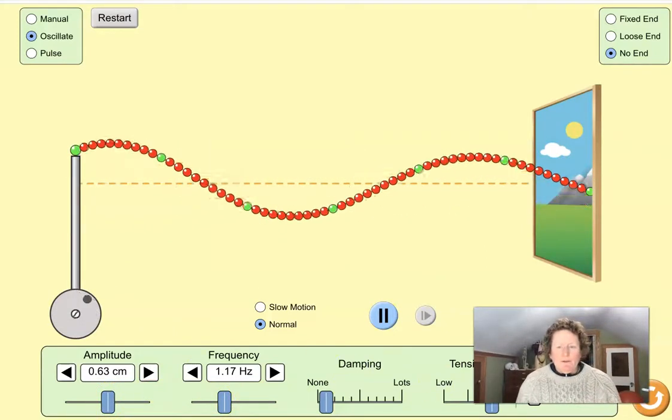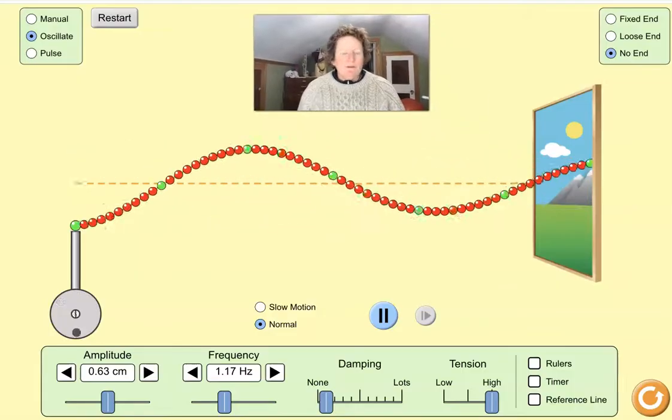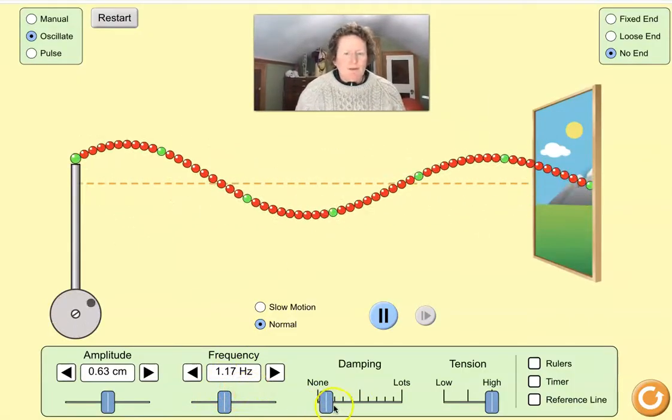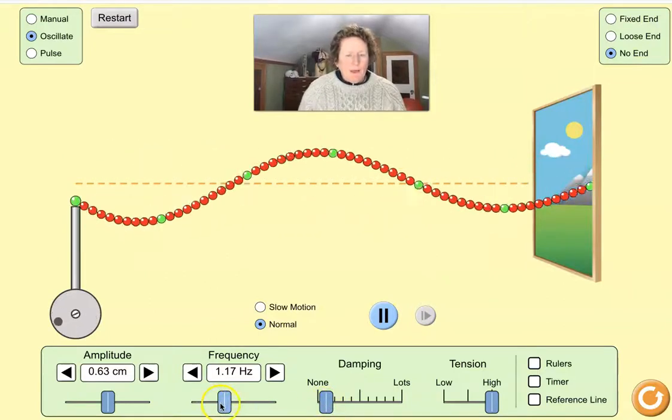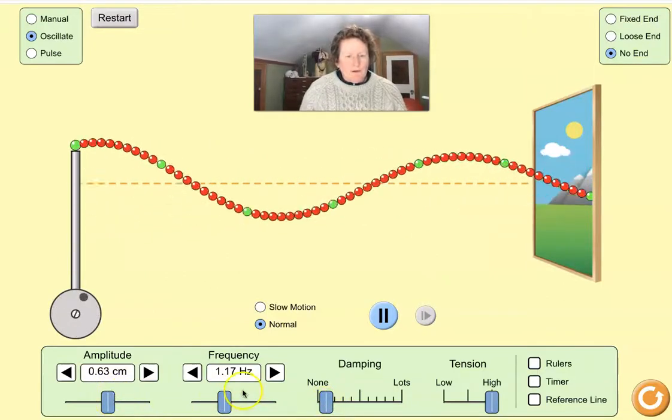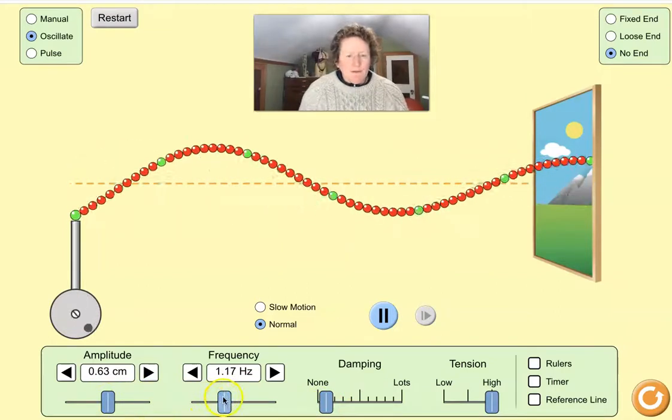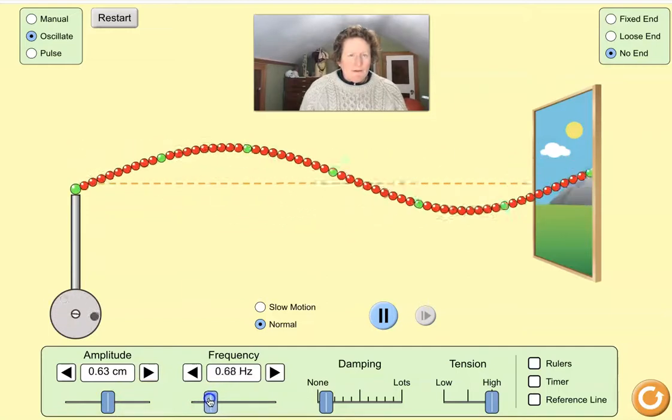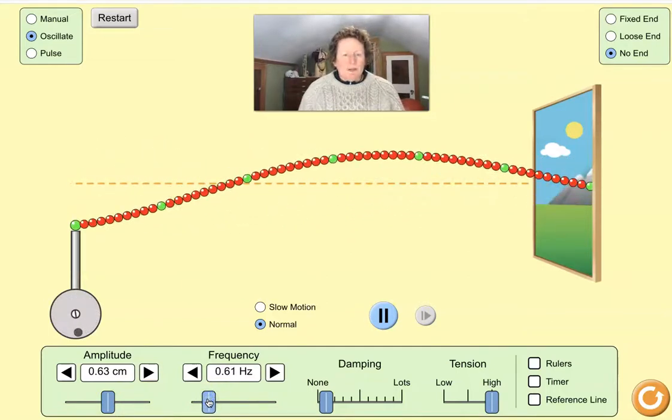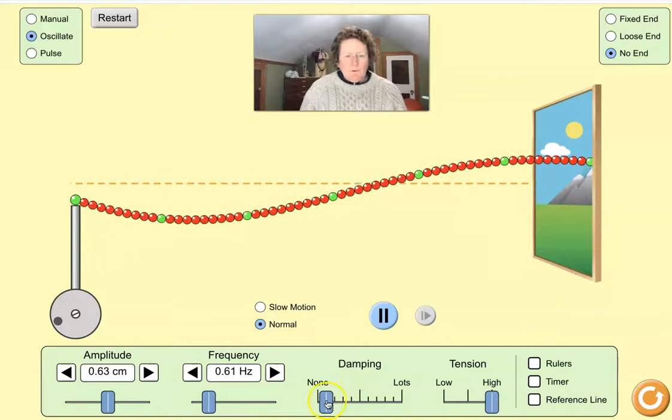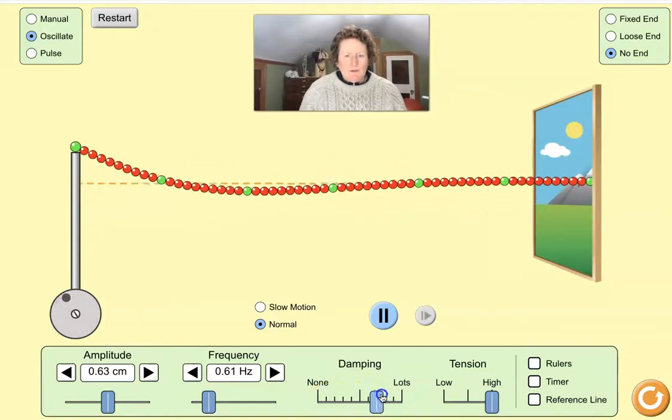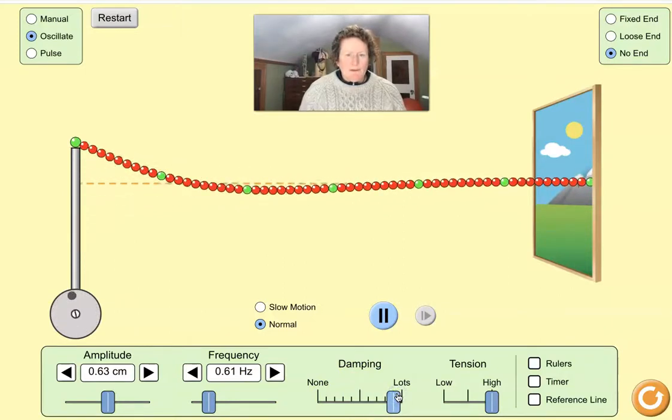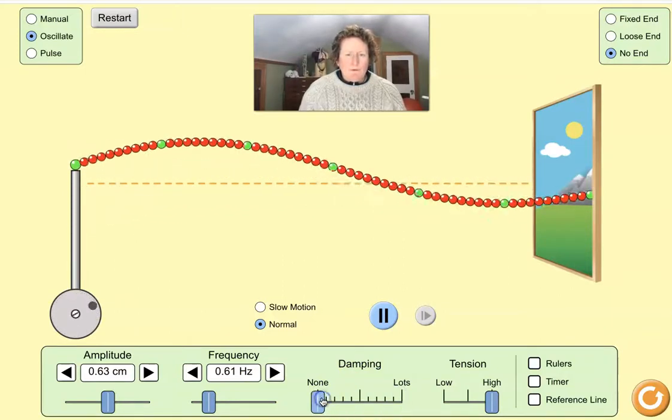As you're working with other functions, I would recommend putting everything in the middle except maybe damping. Put that on none. If you're working with frequency, put amplitude in the middle. Then you can play with frequency. Explain how frequency changes waves. You can explain how damping changes waves. You can have lots of damping. You can have no damping.